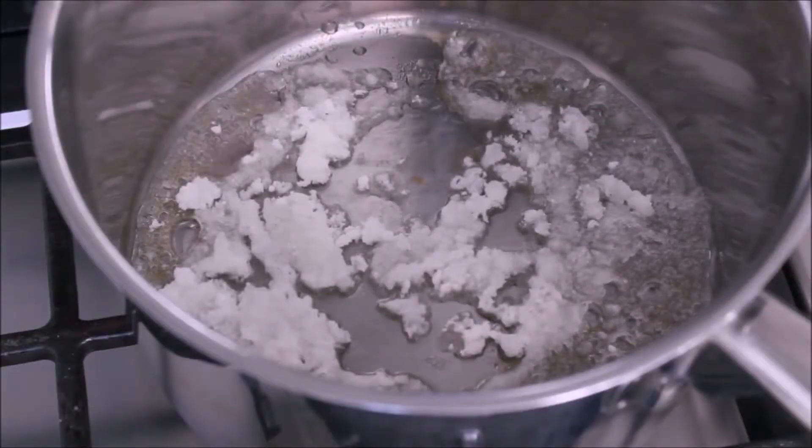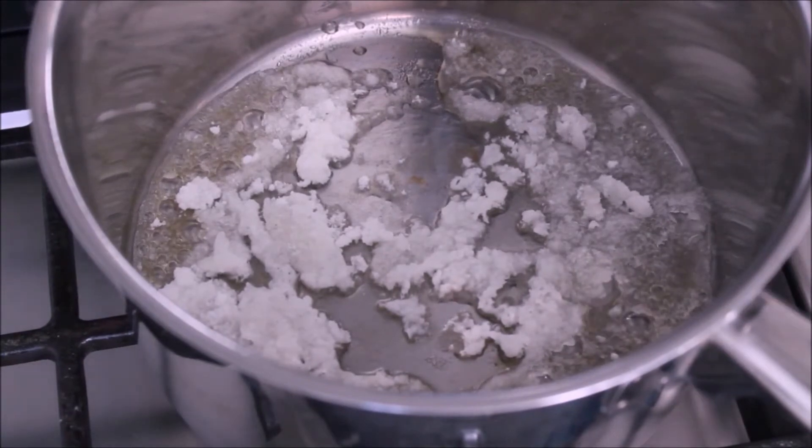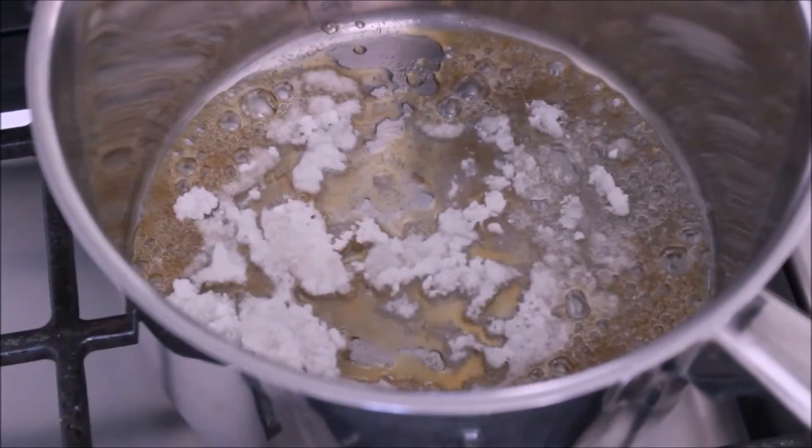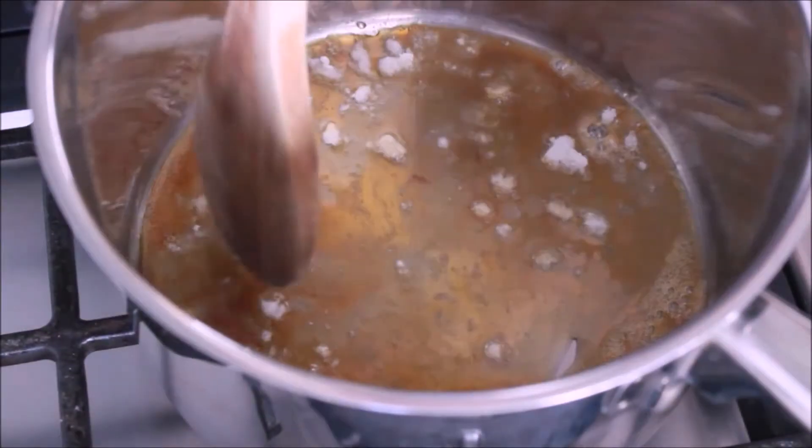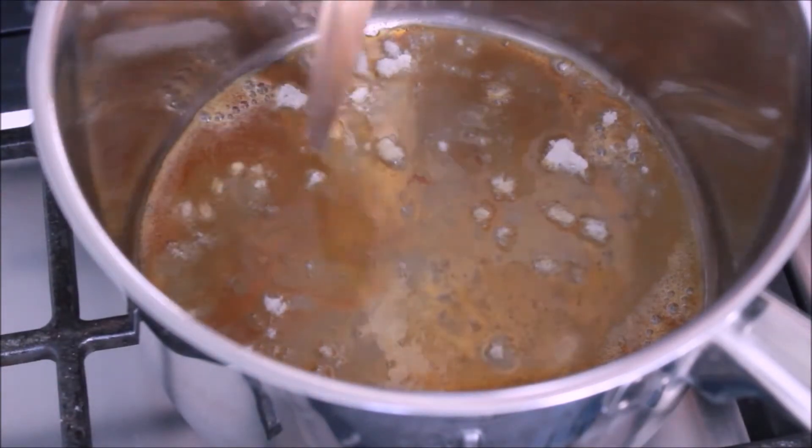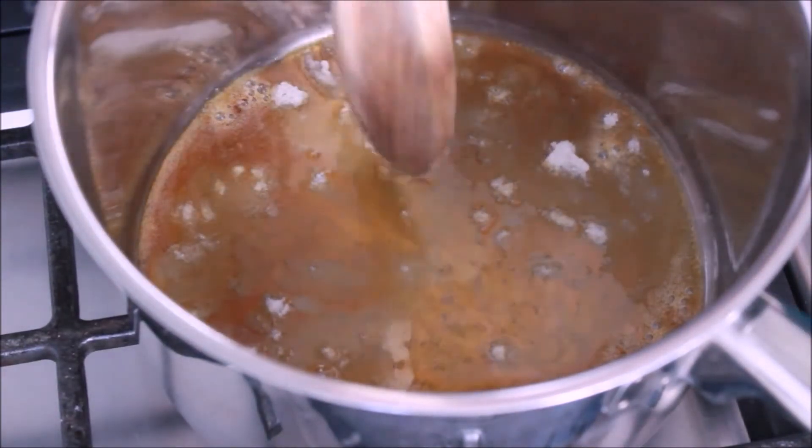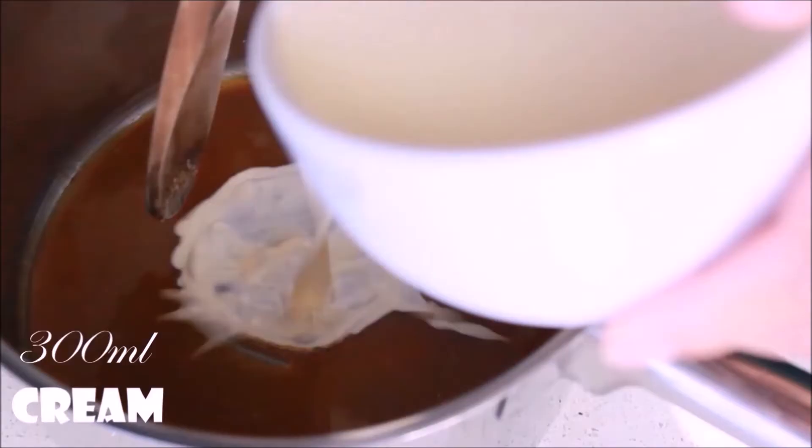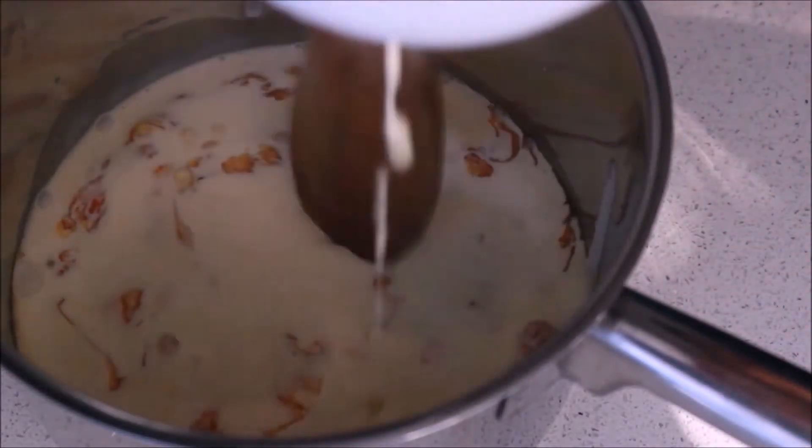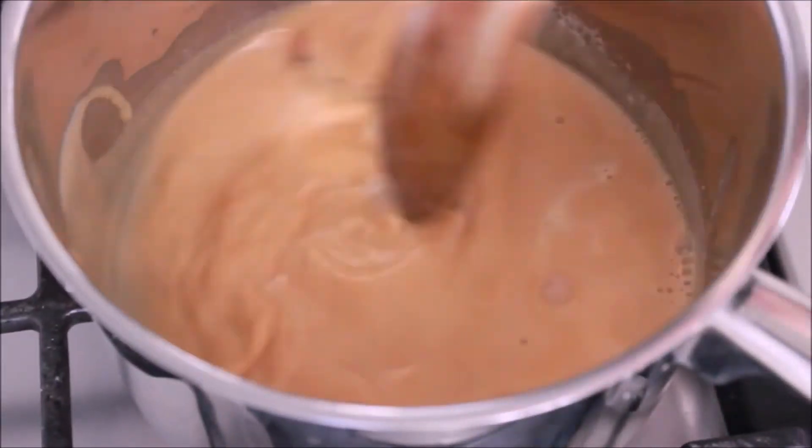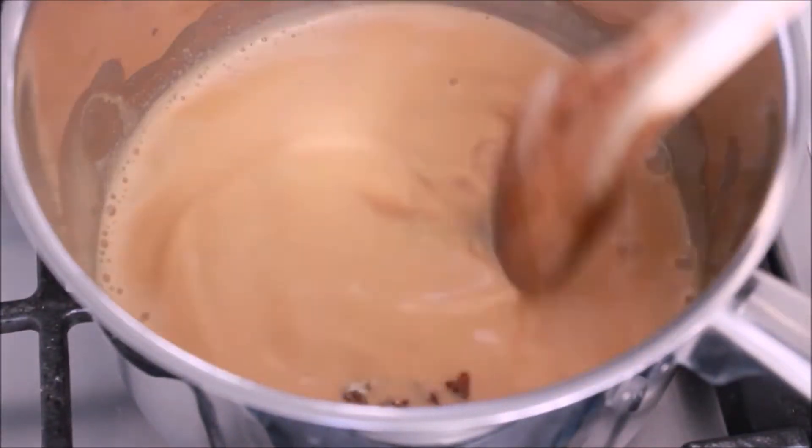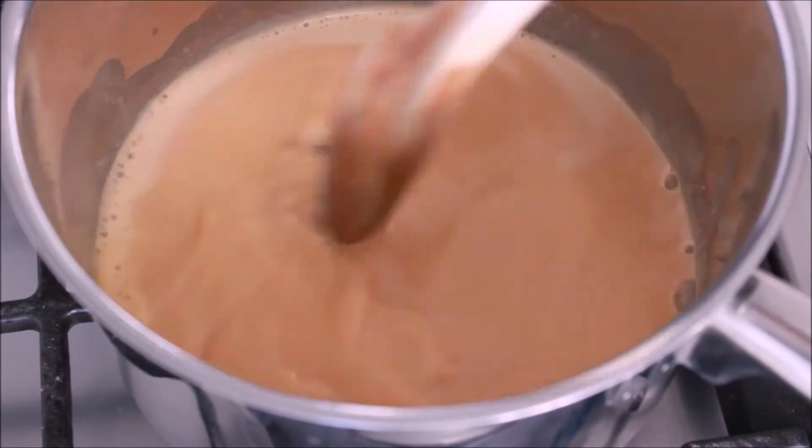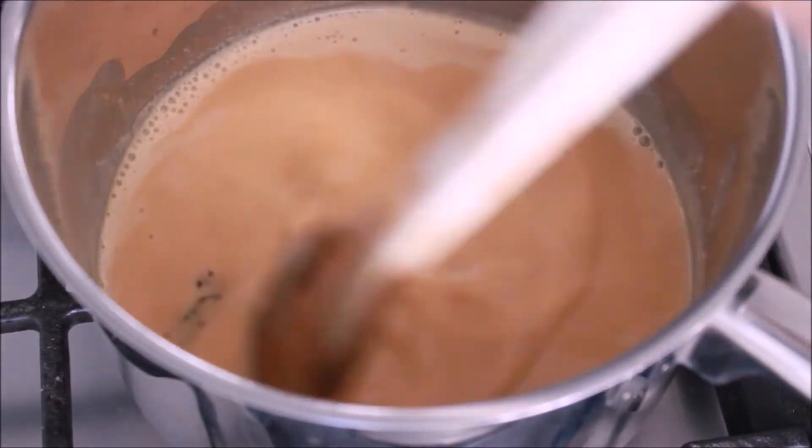From time to time I was gently giving the sugar a little bit of a tap just to help it melt, until it got to that nice golden color. When the caramel is ready, you can add 300 ml of cream. I put everything back into a low heat and I kept mixing until the caramel was completely melted.